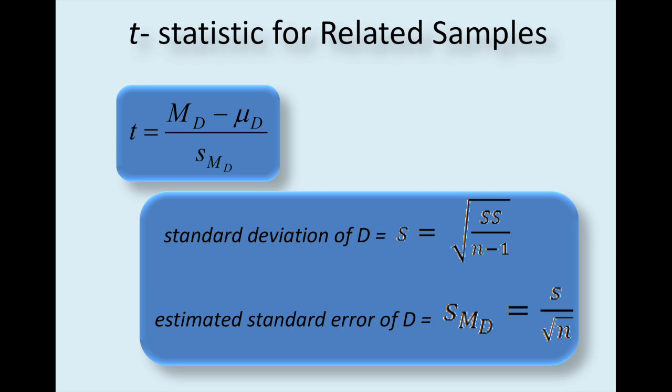Here's your T-statistic for related samples. So you have T equals the mean difference for the sample minus the mean difference for the population, divided by SMD, which stands for the estimated standard error of the mean difference. So how you get the denominator, right, the numerator is pretty easy. Just take whatever the average score is for the differences for the sample and then the population. And there's a couple different steps you have to go through to get the denominator, the bottom part. You find standard deviation of the difference, and you have to find the estimated standard error of the difference.